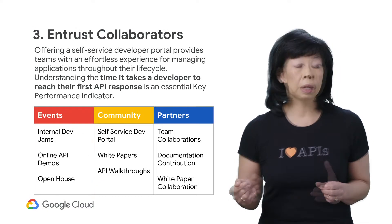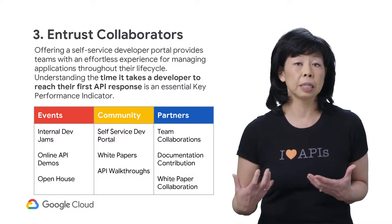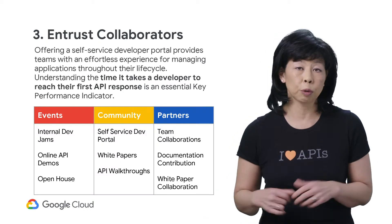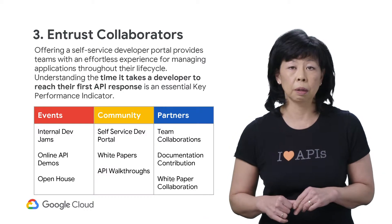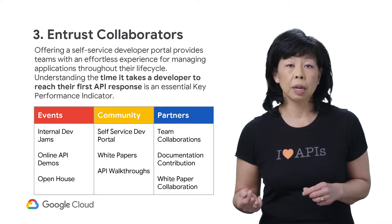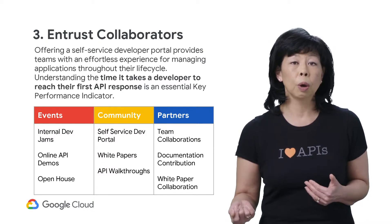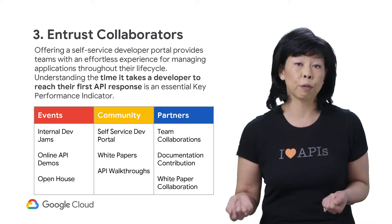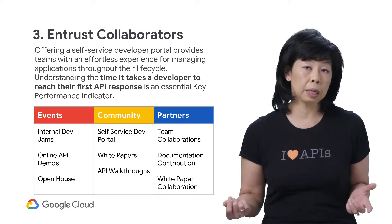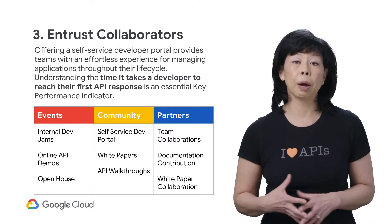Trusting collaborators is about offering a self-service developer experience that provides teams with an effortless way to manage their applications throughout their software development lifecycle. One of the key performance indicators your program should track is the time it takes a developer to reach their first API response, or a time to first hello world. The faster a developer can register for an API key and get an API response, the more empowered they will feel.